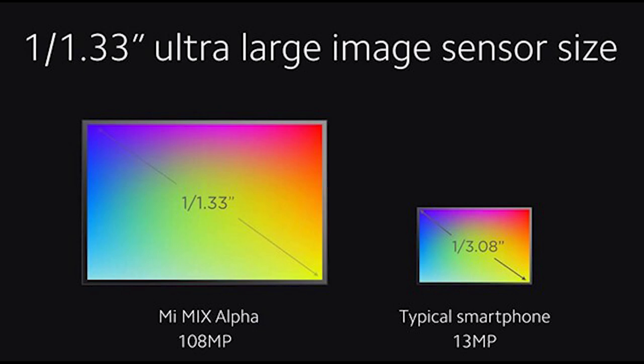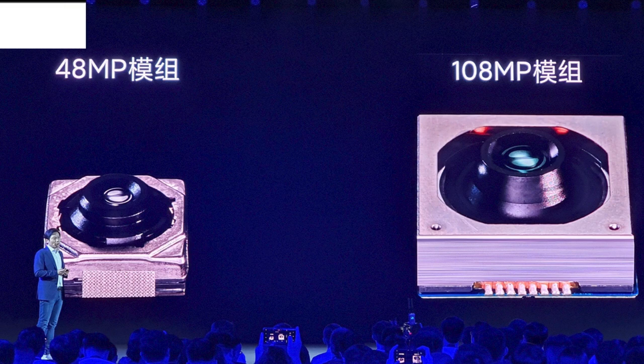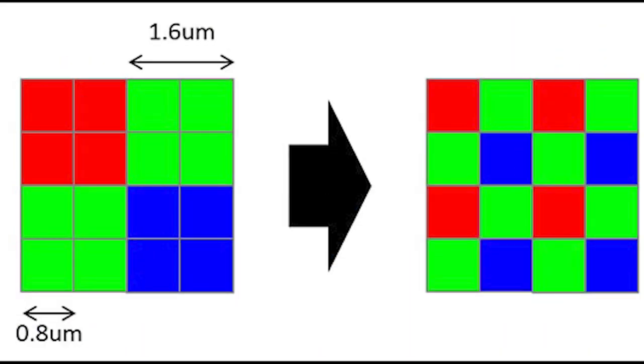For 1/1.63 inch, this is the sensor size. The sensor is the device that captures the light entering the camera and produces a digital image from it — it's essentially the replacement for photographic film. The size of the sensor is important because the bigger the sensor, the more light it can potentially receive, and the more light it receives, the better the picture quality. This is especially important in smartphone cameras because of their size limitations.